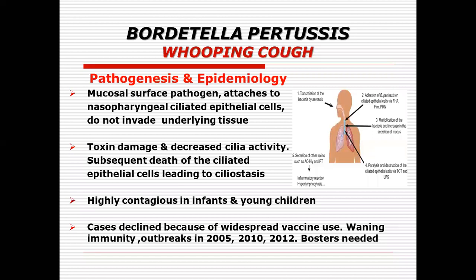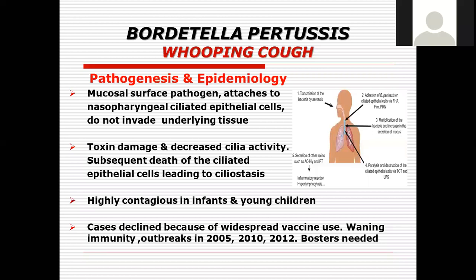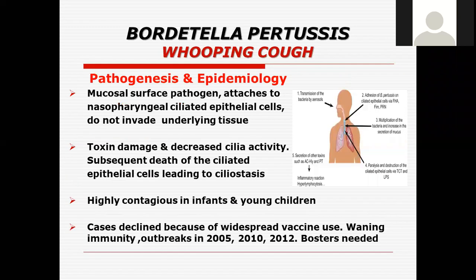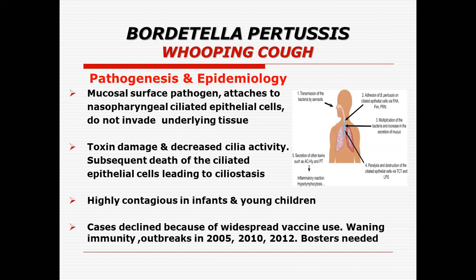The transmission of the disease is very simple. The organism enters the body through aerosol. It attaches to the ciliated epithelial cells with the help of hemagglutinin receptors, and then it multiplies and increases in numbers. This increases the amount of mucus secretions. Then it causes paralysis and destruction of the cilia, along with secretion of material that accumulates because of the reaction of the various toxins.